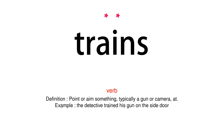Verb. Definition: Point or aim something, typically a gun or camera, at a target. Example: The detective trained his gun on the side door.